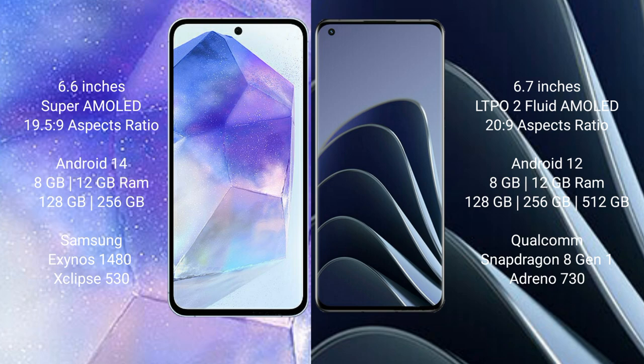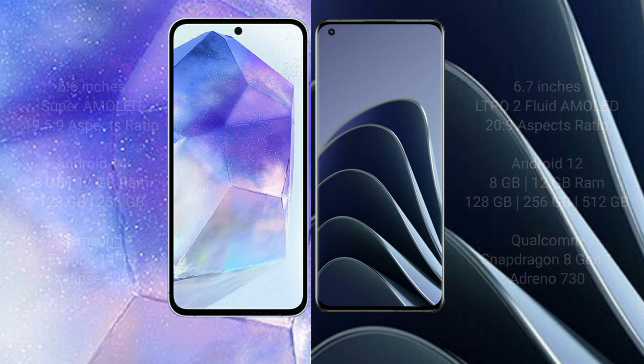OnePlus 10 Pro comes with 8GB or 12GB RAM, and 128GB, 256GB, or 512GB internal storage. It is powered by the Qualcomm Snapdragon 8 Gen 1 processor with Adreno 730 GPU.